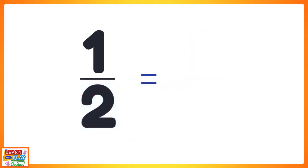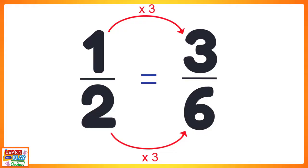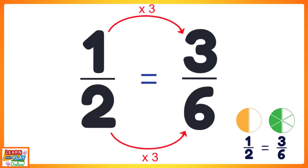Let's now multiply one half with another whole number to see if we can find a different fraction that is equivalent. Let's multiply the numerator by three. One times three equals three. What you do to the top, you must do the same to the bottom. So two times three equals six. Now we can say that one half is equivalent to three sixths. And here is a cheeky picture to prove it is true.